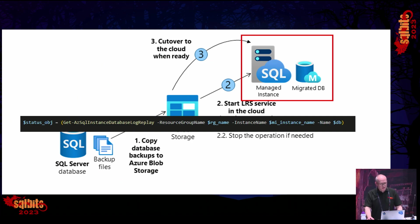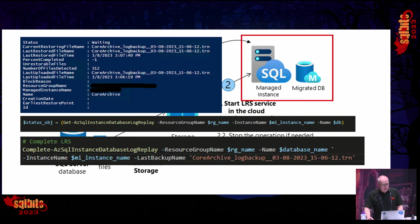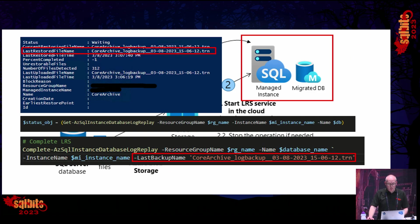To monitor the LRS process, we use the Get-AzSqlInstanceDatabaseLogReplay command. That gives us output showing the status of 'Waiting', and the last restored and currently restored file names are both the same — that is our last tail log backup taken in the previous step. When everything is synchronized, we're ready to complete the LRS process using Complete-AzSqlInstanceDatabaseLogReplay, passing in the last backup name parameter, which should correspond to the tail log backup and also be the last restored file name on LRS.